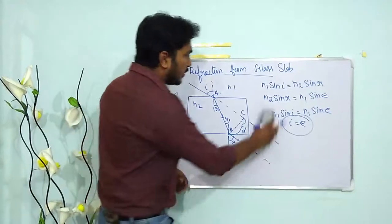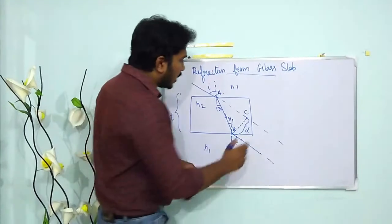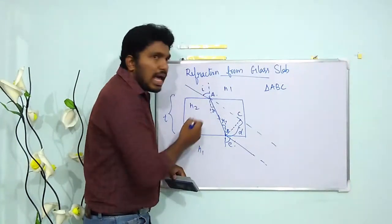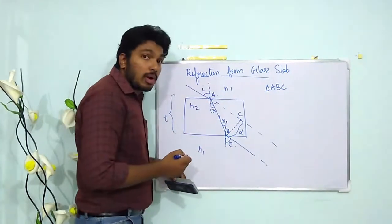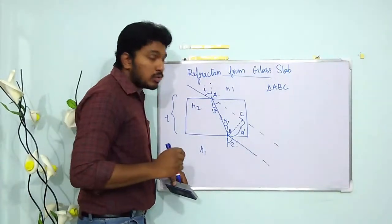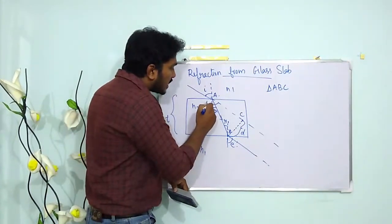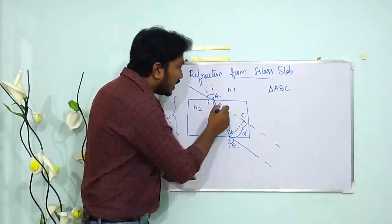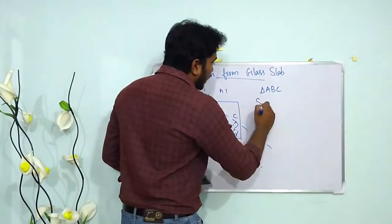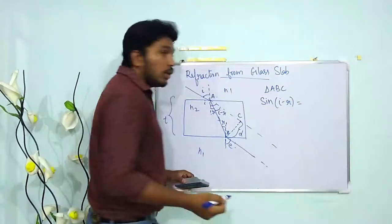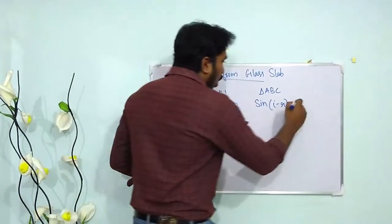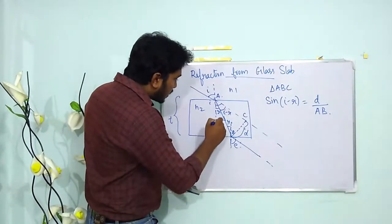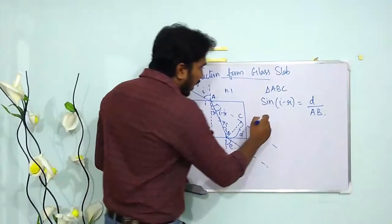Now, how do we find the lateral displacement d? Look at triangle ABC. The angle at A is i, the refracted angle is r, so the angle at the top of the triangle is i. The angle ACB must be i minus r. Therefore, in triangle ABC: sin(i − r) = opposite side d divided by hypotenuse AB.